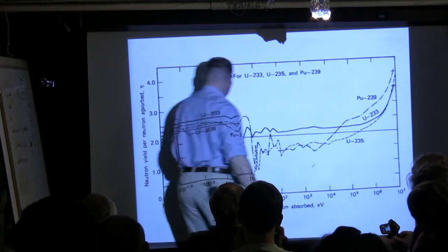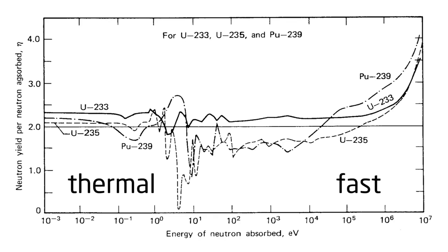Okay, this is the fast region. This is the thermal region. Squiggly lines... and you could probably tell the entire history of the development of nuclear energy in this one graph, and I'll tell you why.